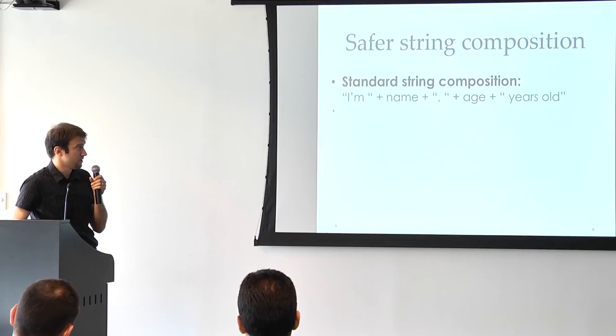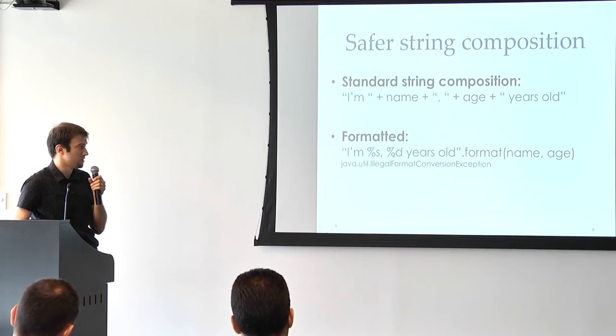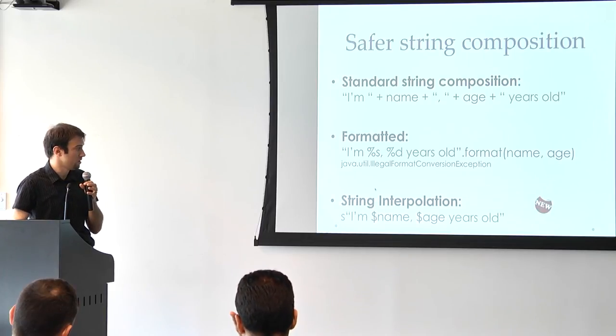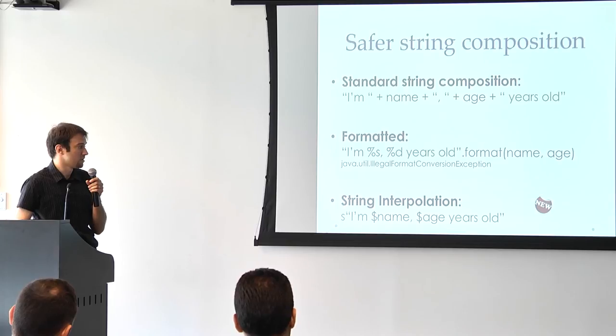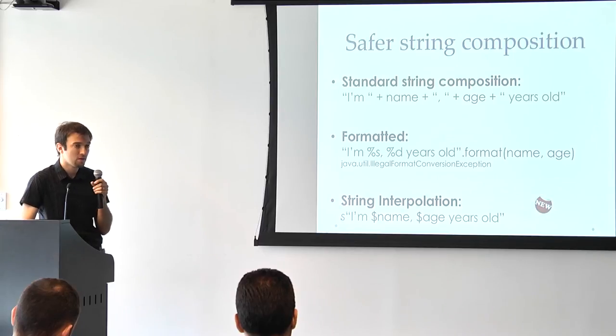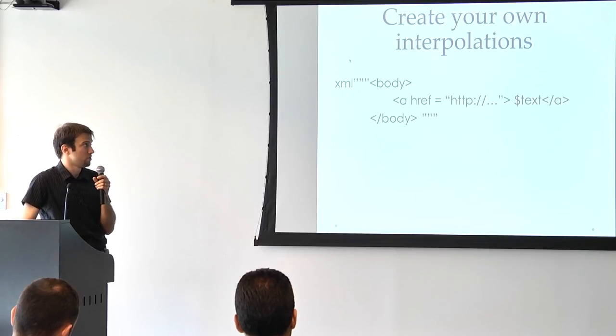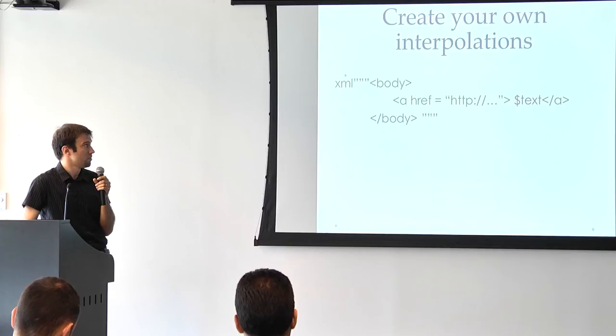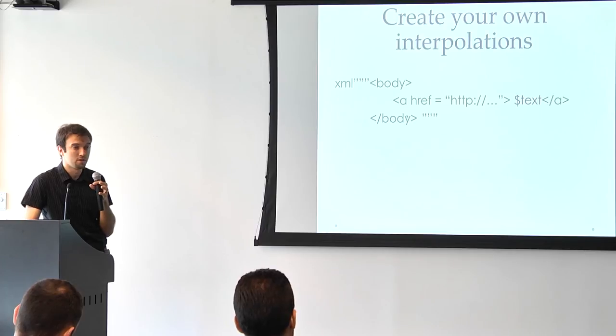This is how we are used to compose strings in Java, as well as this one. This one is not really safe because we can get illegal format conversion exception. What we are used to from many dynamic languages, and now we also have it in Scala in a very type-safe way, would be the string interpolation, which means that we can just call these variables from here just by adding the prefix s. The cool thing is that you can create your own interpolations. For example, s is just a special case of interpolation. You can create additional ones for XML or SQL queries. In this case, this will produce probably an XML DOM.